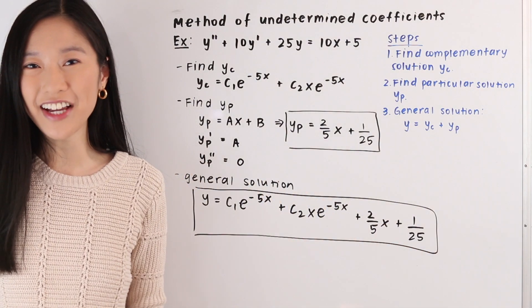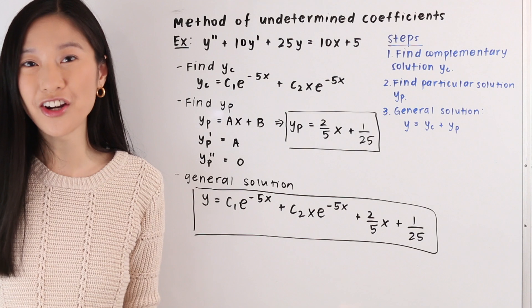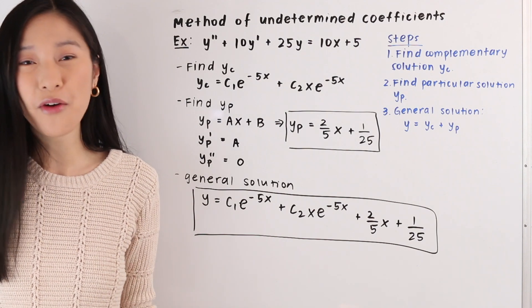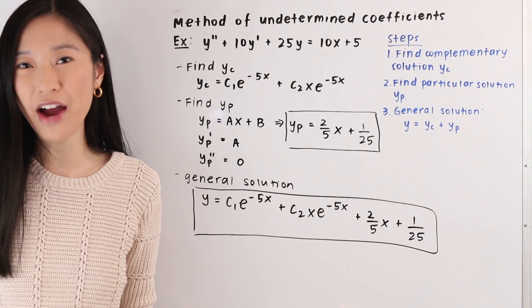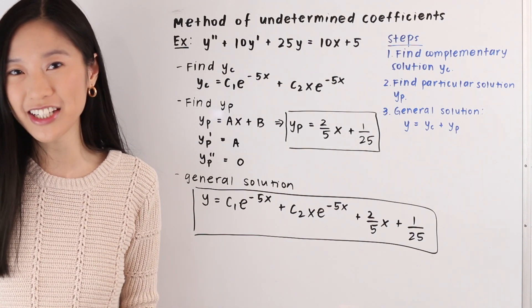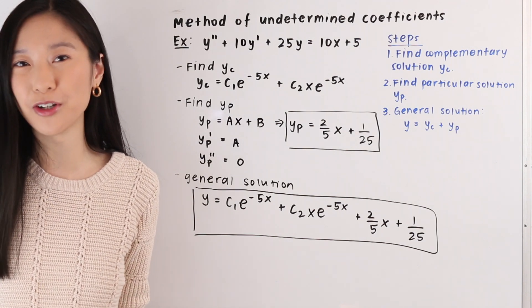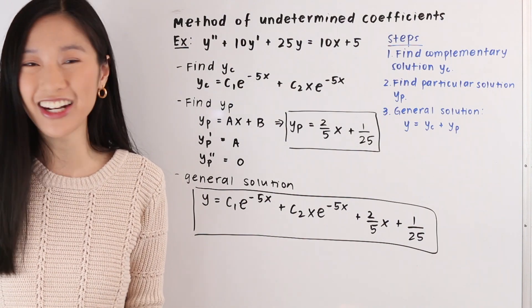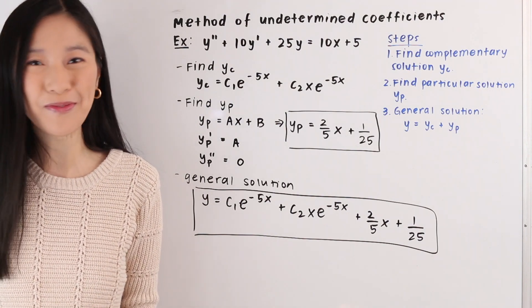And that is how you solve a second order non-homogeneous linear differential equation when the right hand side is equal to a polynomial. Thank you guys so much for watching and I'll see you guys next time, bye.